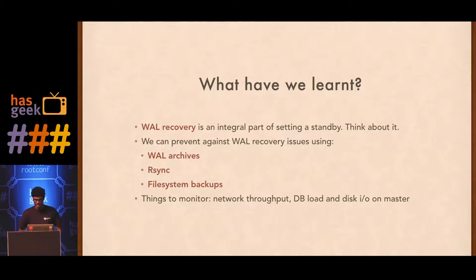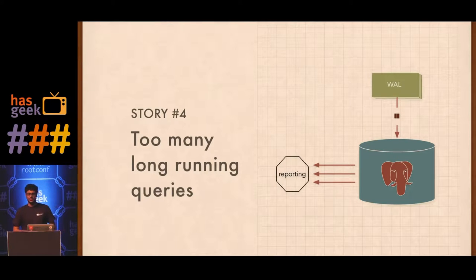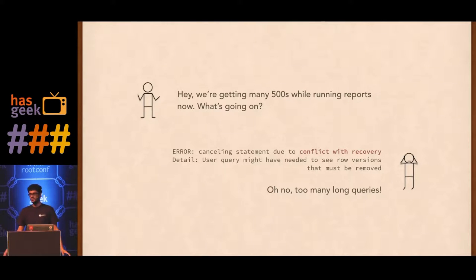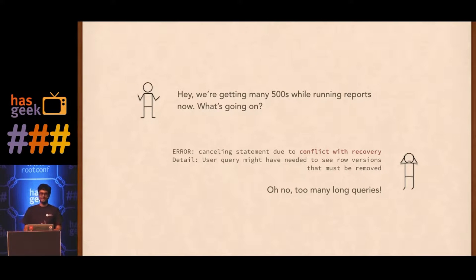That brings us to another story. The issue wasn't that difficult to understand but was more difficult to fix. We had a bunch of 500 errors on our reporting service — people were trying to get reports and we weren't able to give them, so we had to manually run reports. Looking in the logs, the error Postgres throws is: 'conflict with recovery.' We kind of knew about this but hadn't encountered it as deeply as we did then.